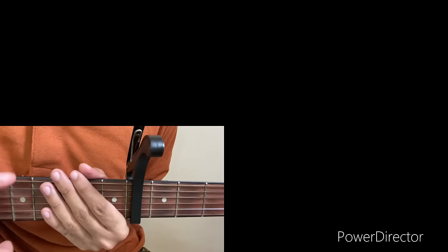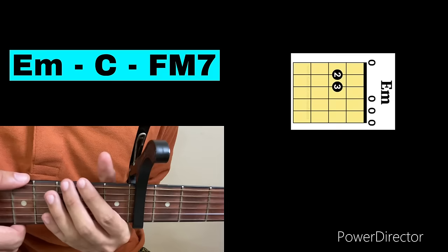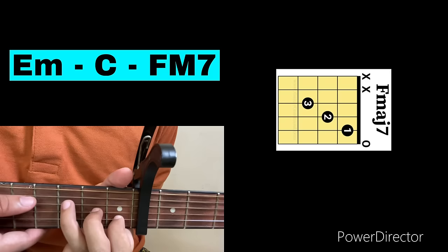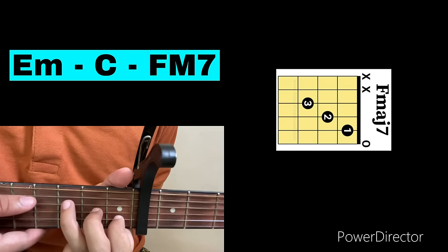Then after the verse, we go to the pre-chorus. For the pre-chorus, the chords we'll use are E minor, C, and F major 7. Same chords. Let's play it.